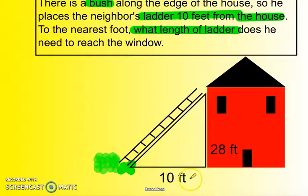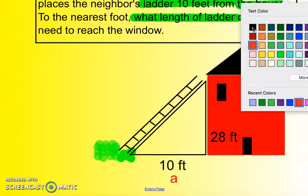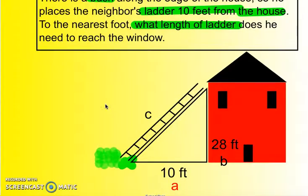This reminds me of the Pythagorean Theorem. We have two legs. We could call this one leg A, and this one could be leg B. And then this one could be leg C. So let's look at the Pythagorean Theorem again and plug in the information that we're given.